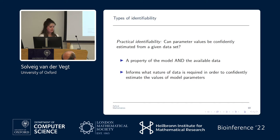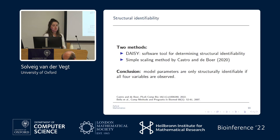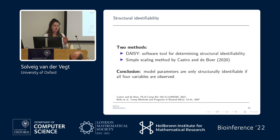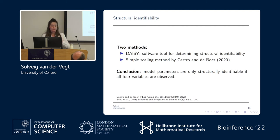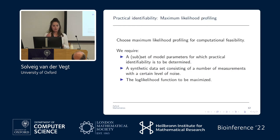To assess structural identifiability we used two methods: DAISY software and a simple scaling method introduced by Costel and Debor. The important finding is that our model parameters are only structurally identifiable if we observe all four variables. This tells us we do have structural identifiability, and it also gives us the first requirement on our data sets: we must observe all four variables.